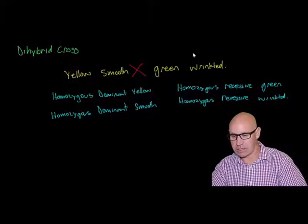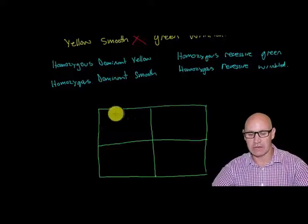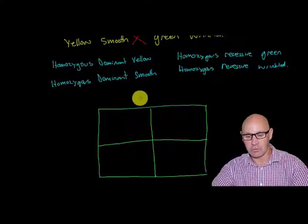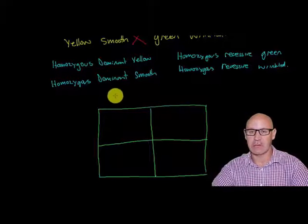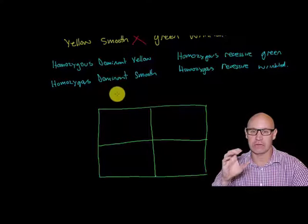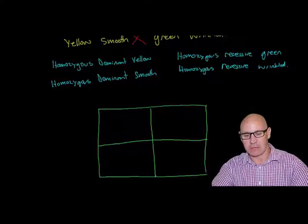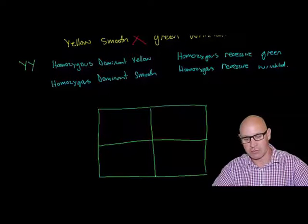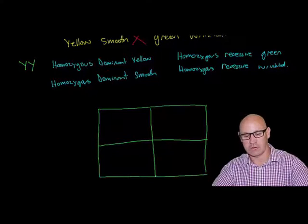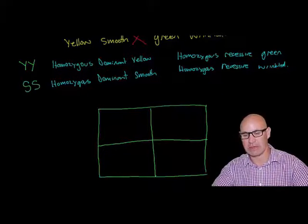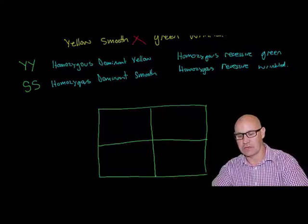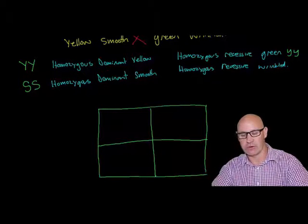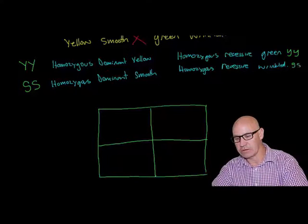We're going to do a Punnett square to see what the possible alleles will be in the offspring. In each box, we write down the possible alleles. Because we have homozygous dominant yellow, that's capital Y, capital Y, and homozygous dominant smooth, that's capital S, capital S. Homozygous recessive green is little y, little y, and homozygous recessive wrinkled is little s, little s.